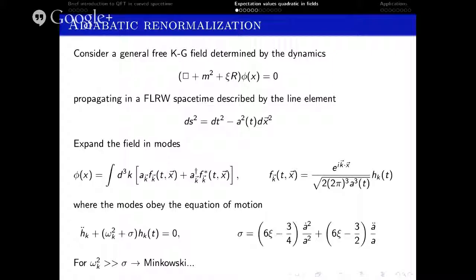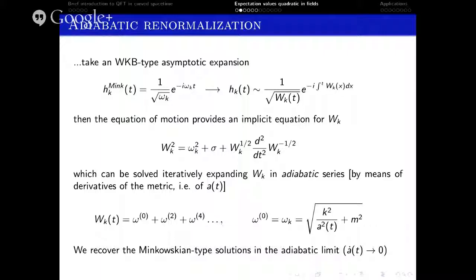From this equation we can see an important fact. If we take the limit of large momentum of the field modes with respect to the rate of expansion of the universe — that is, when omega is much greater than sigma — then the equation of motion asymptotically reduces to that in Minkowski space, recovering the Minkowski mode solutions. This is crucial in establishing the so-called adiabatic condition: in the limit that the rate of expansion of the universe is sufficiently slow compared to the frequency of the field modes, the Minkowski modes should be recovered.